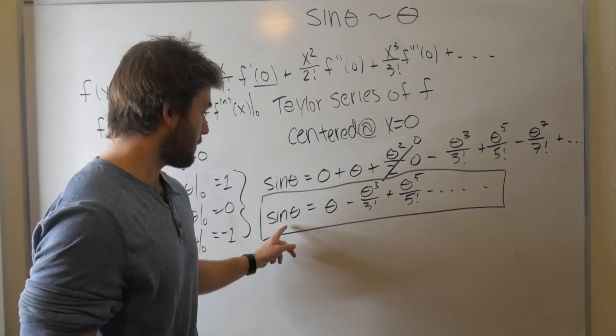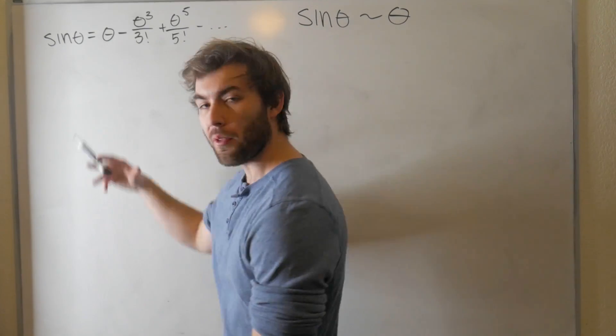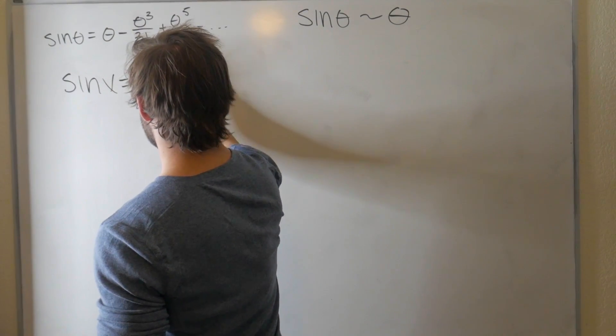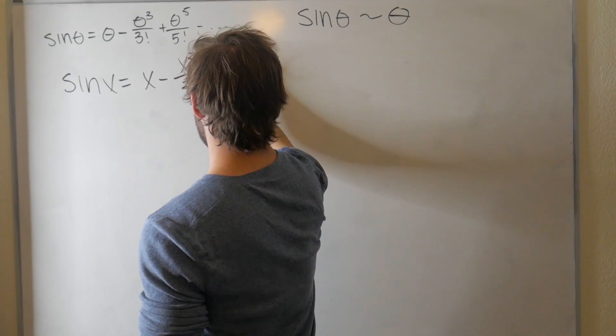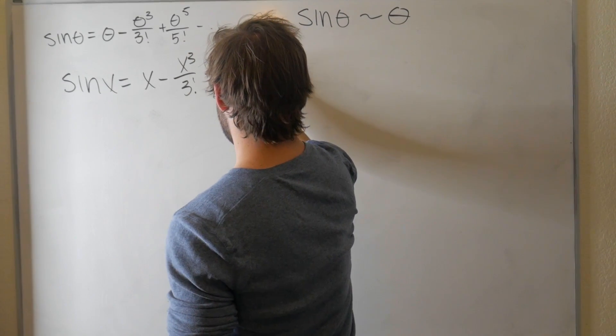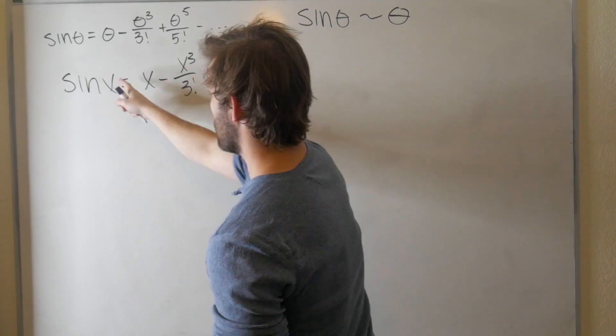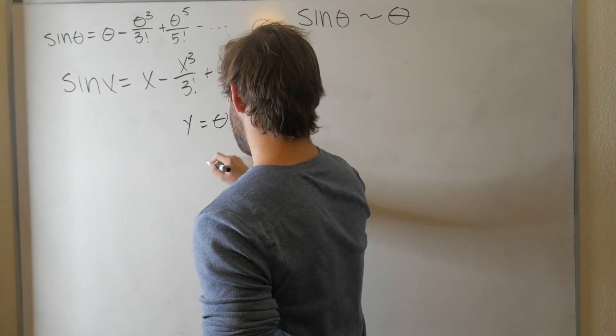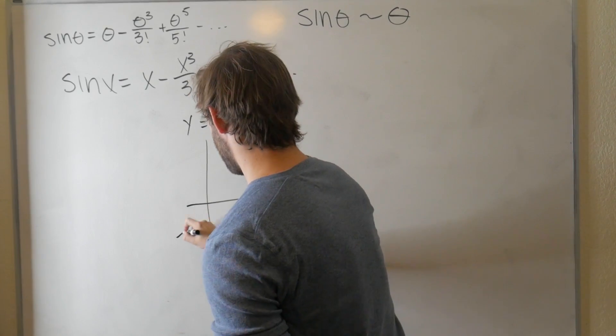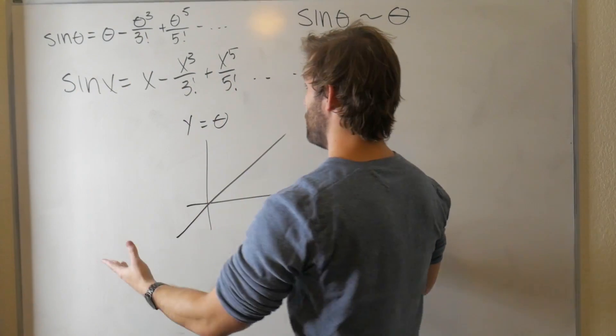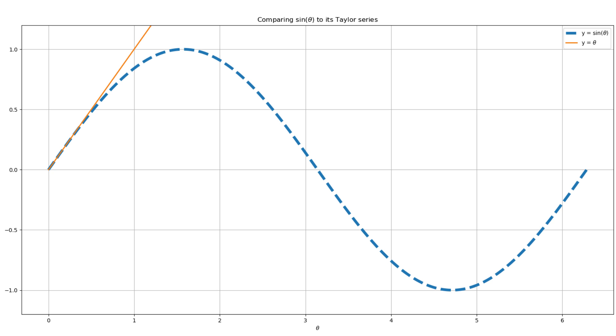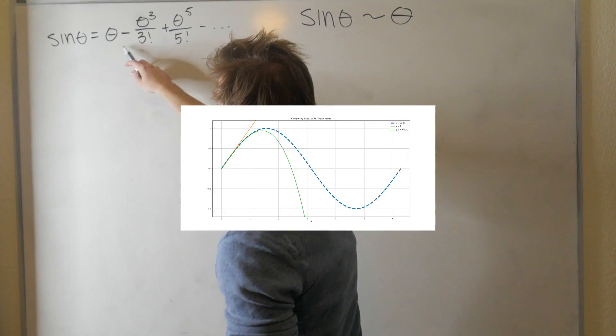Since including more and more terms gives us a better approximation to sine of theta, are there values of theta such that only including the very first term gives me a good enough approximation? Another concern is you might not be convinced this starts to look like sine of theta. So let's take a moment to compare sine of theta to this polynomial expansion as we start to include more and more terms.